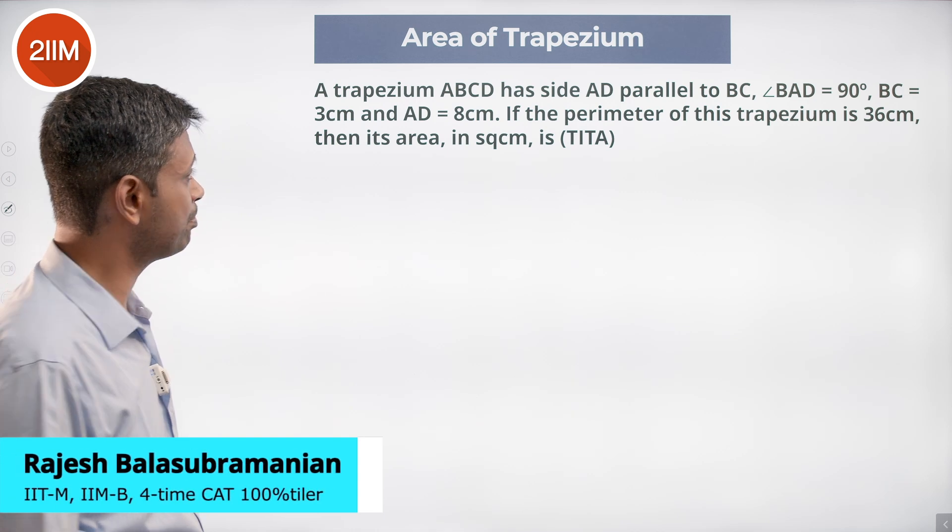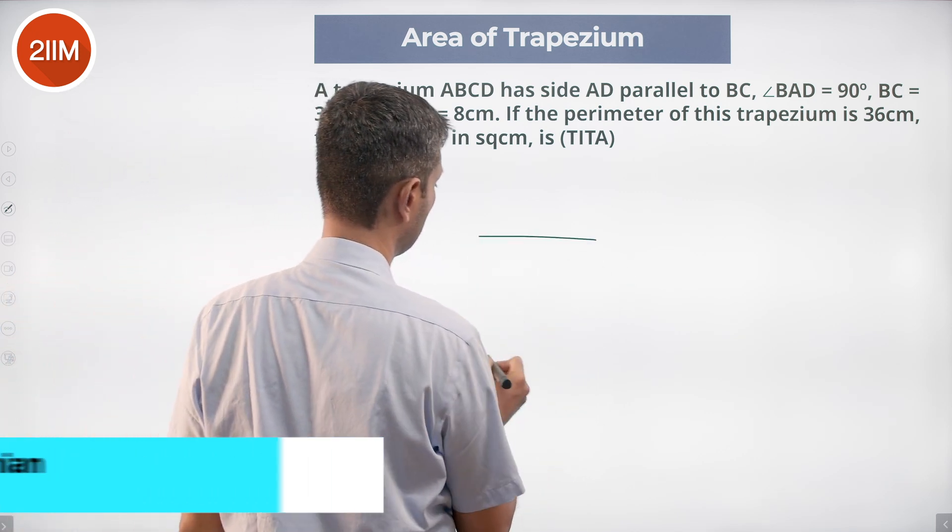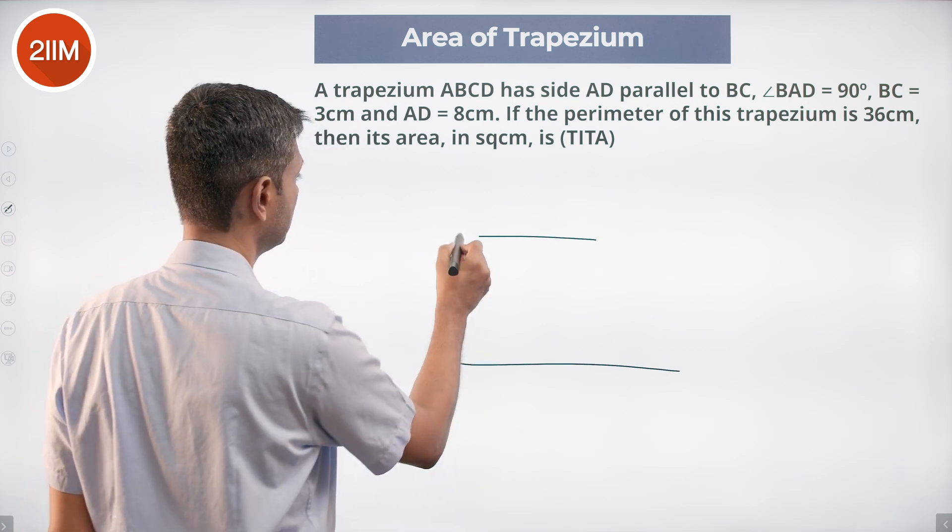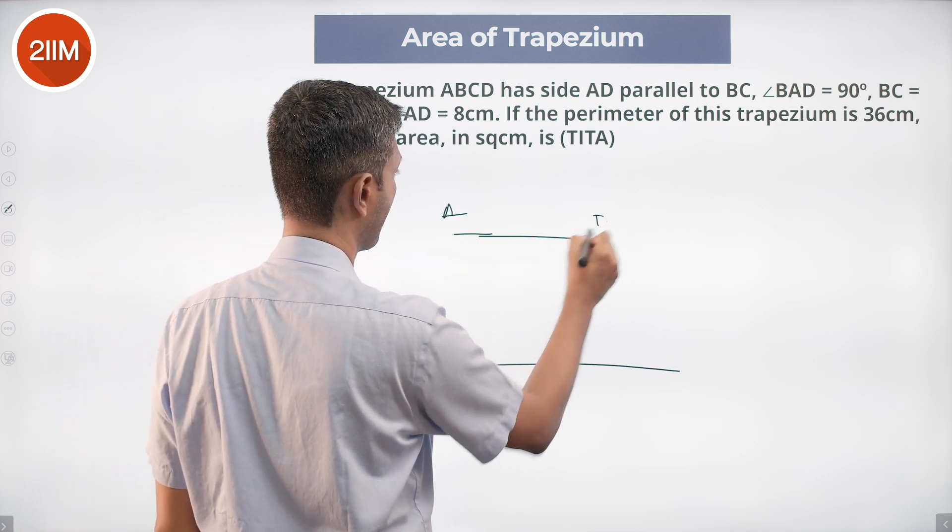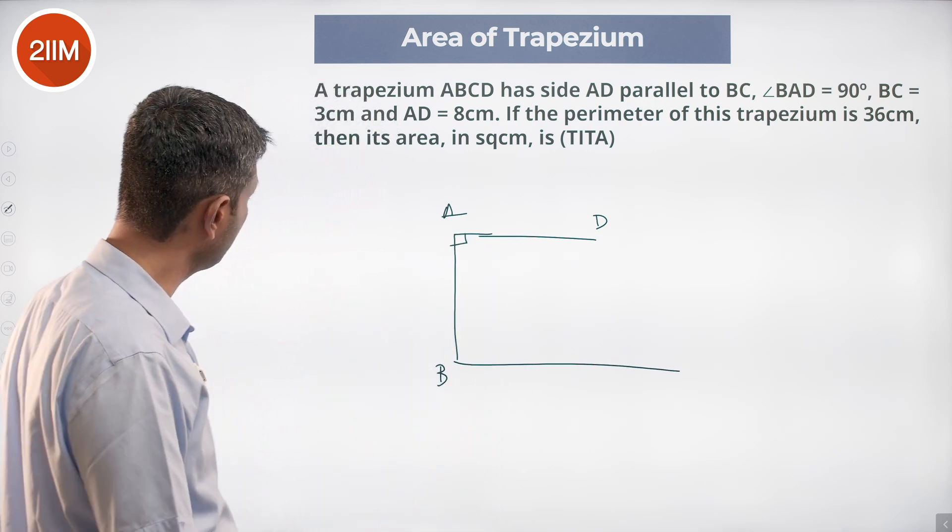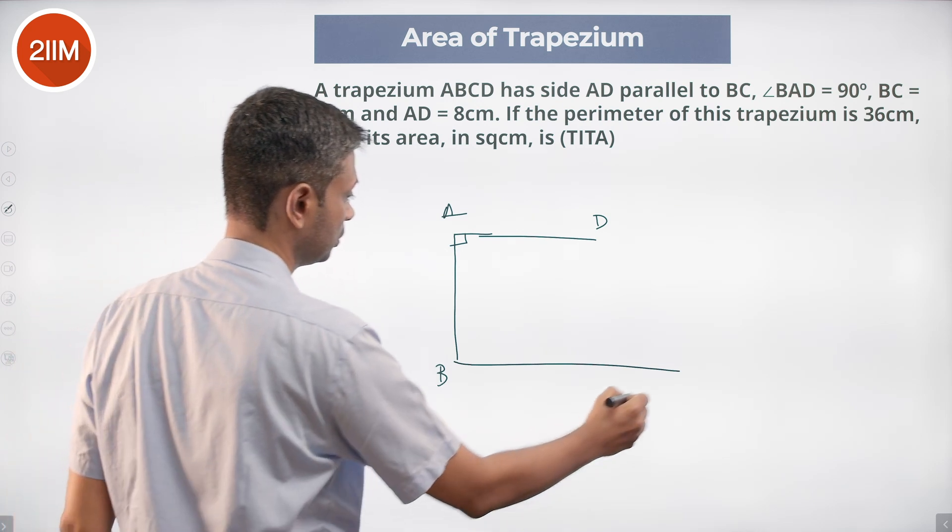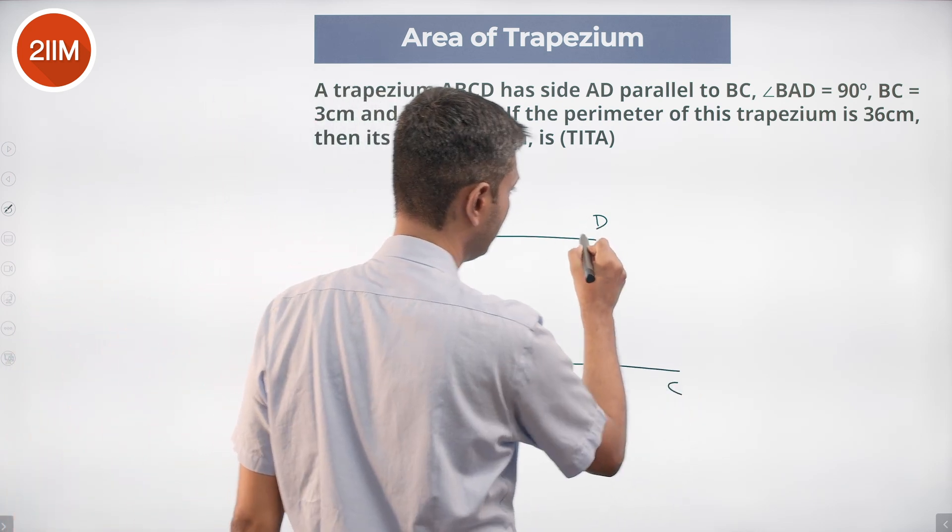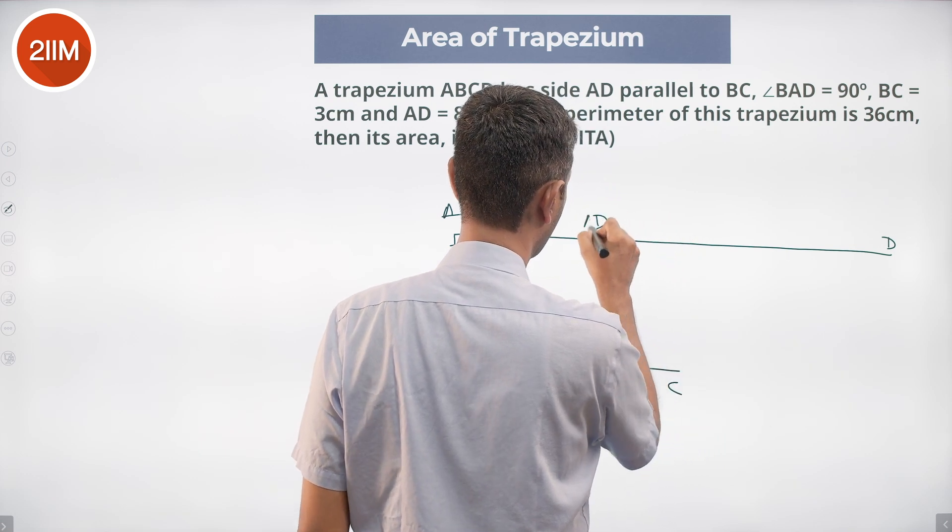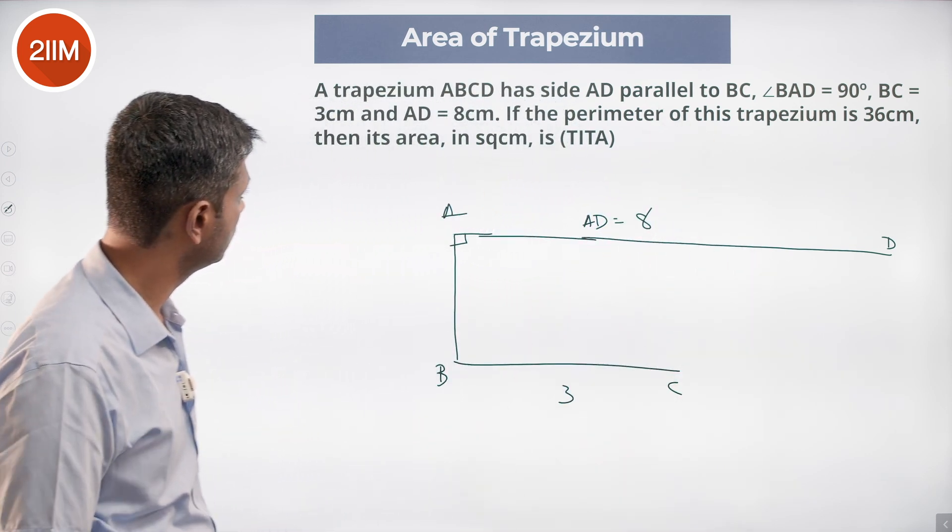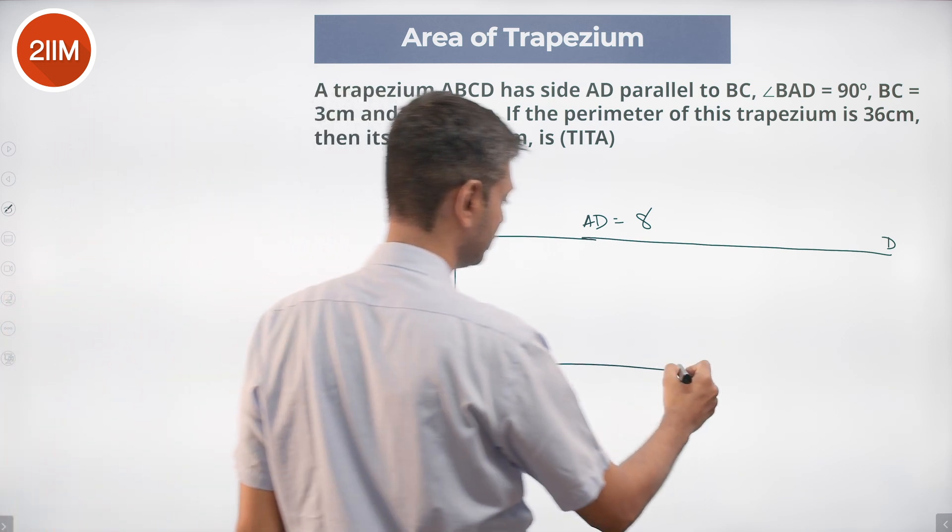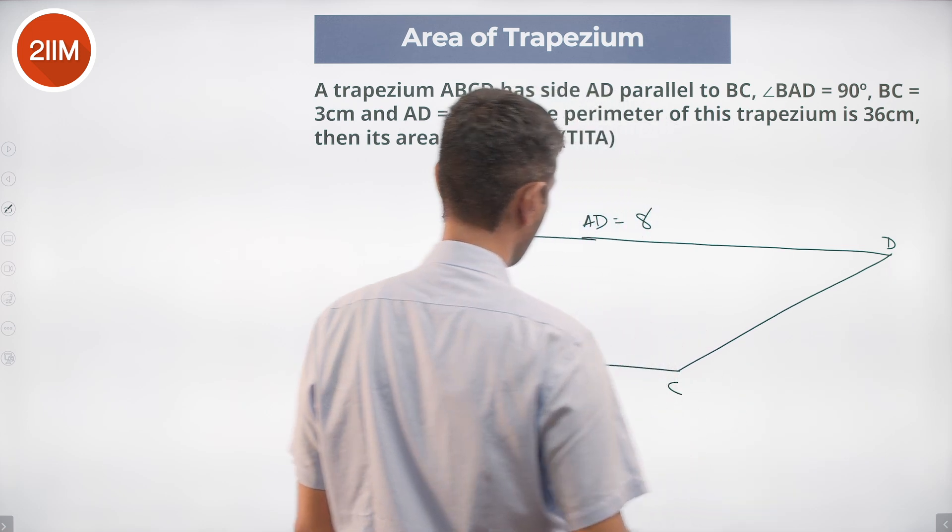A trapezium ABCD has side AD parallel to BC. Angle BAD is 90 degrees. BC is 3 cm and AD is 8 cm. So BC is 3 and we have AD here, AD is 8. The perimeter of the trapezium is 36 cm. 3 plus 8...